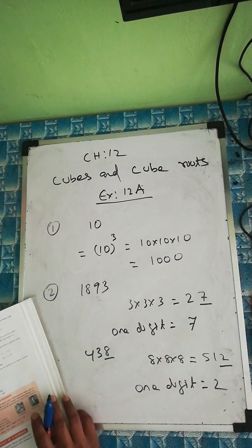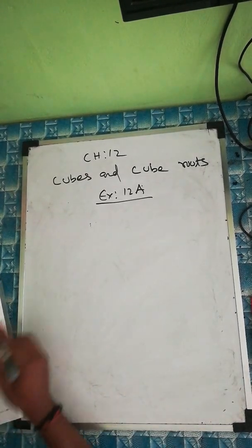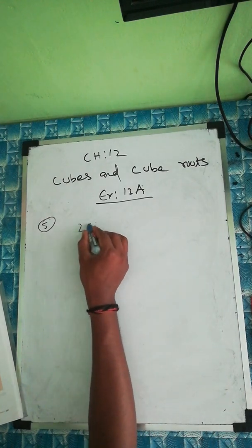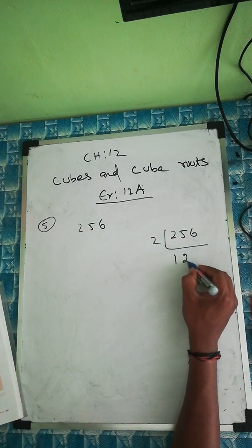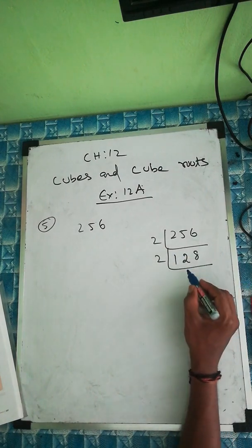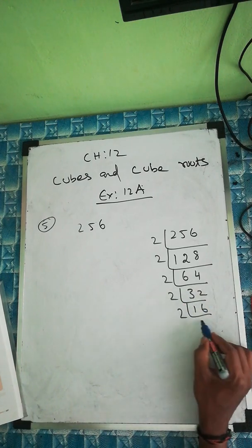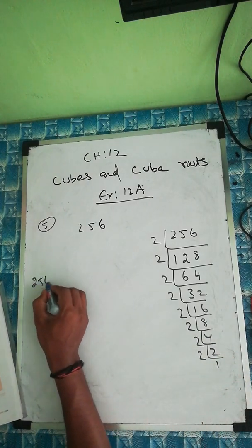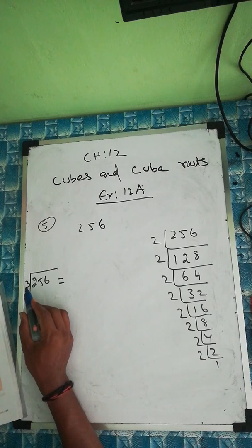Now we'll go to question number 5: which of the following are perfect cubes? In case of a perfect cube, find the number whose cube is the given number. So 256 is given. We'll do the same process like the last chapter. For cube root, we write 3 inside. So the number 256 gives us 8 twos when we factorize — 2, 2, 2, 2, 2, 2, 2, 2.